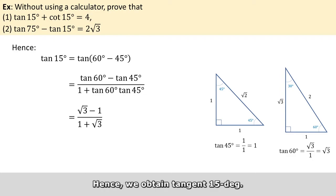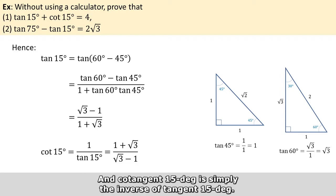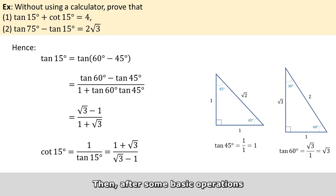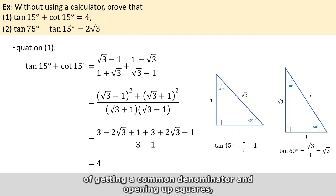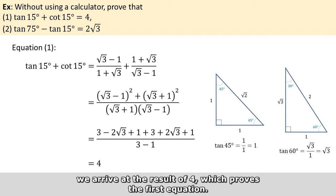Hence, we obtain tangent 15. And cotangent 15 is simply the inverse of tangent 15. And then after some basic operations of getting a common denominator and opening up squares, we arrive at the result of 4, which proves the first equation.